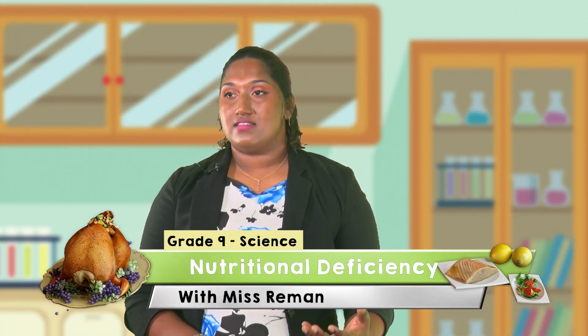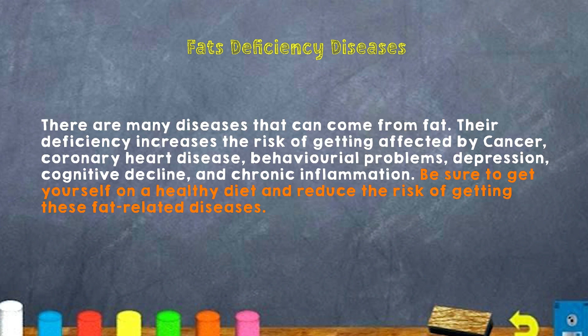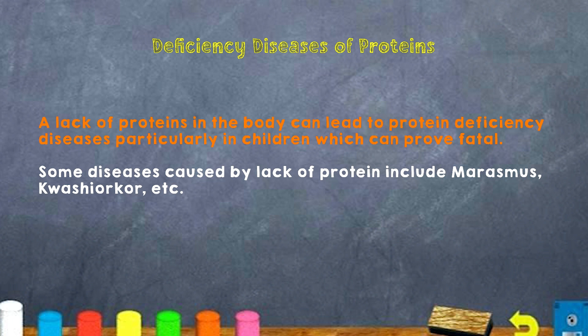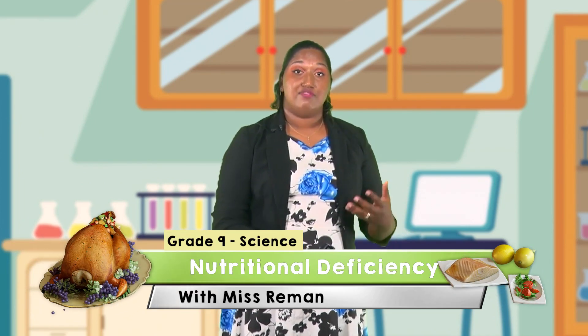The next deficiency is fat deficiency. There are many diseases that come from fat deficiency — it increases the risk of cancer, coronary heart disease, behavioral problems, depression, cognitive decline, and chronic inflammation. Be sure to maintain a healthy diet to reduce the risk of fat-related diseases. Next, protein deficiency: a lack of protein in the body can lead to serious deficiency diseases, particularly in children, which can prove fatal. Diseases include marasmus and kwashiorkor. Treatment involves a diet rich in protein.